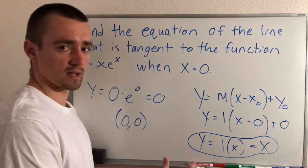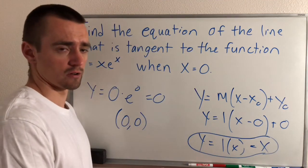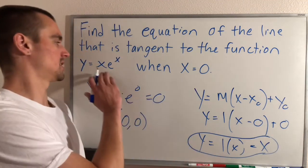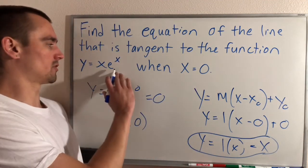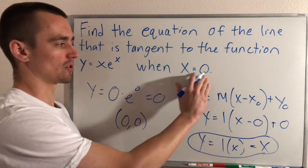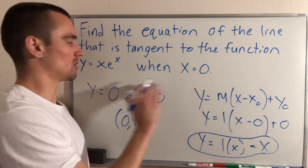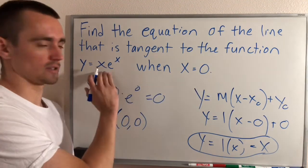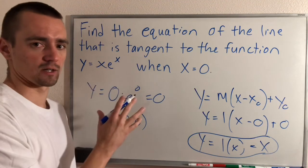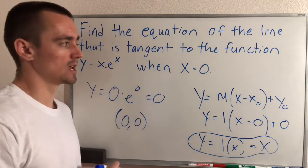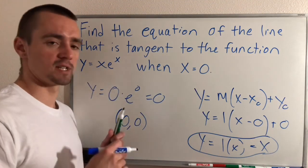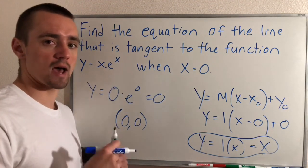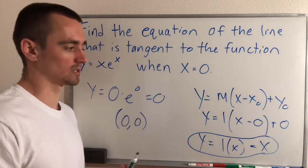So y equals x is the equation of a line that has the same slope as our function when x equals 0, and also has the same y value as our function when x equals 0. So it's going to be tangent to that function at x equals 0.